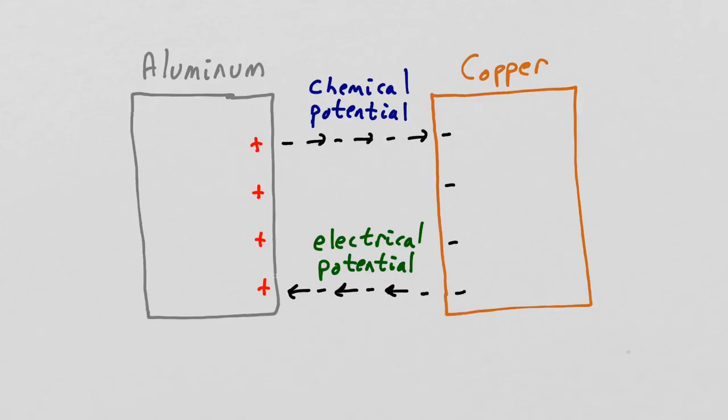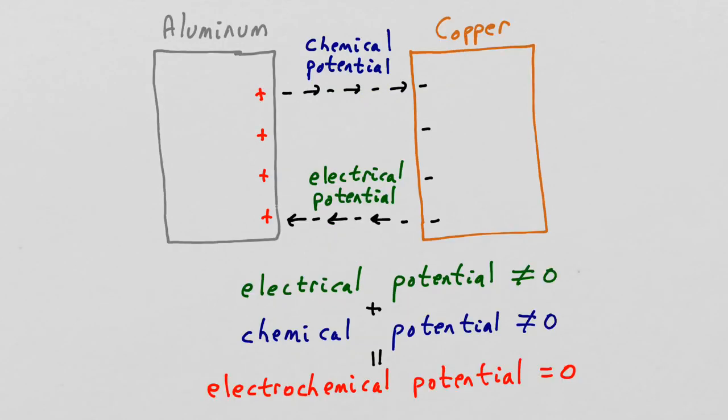In equilibrium, every process and its inverse process are in balance. The sum of the electrical potential plus the chemical potential is what we call the electrochemical potential. In equilibrium, when the aluminum is in equilibrium with the copper, it's the electrochemical potential that's going to be zero. There's still an electric potential and a chemical potential, but the sum of those two is zero in equilibrium.